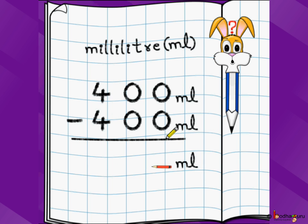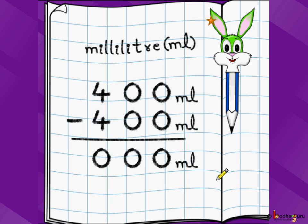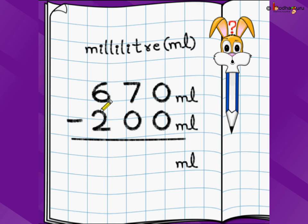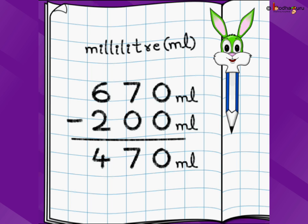Let us take a problem of millilitre. 400 millilitre minus 400 millilitre — the answer is also going to be in millilitre. We start from the rightmost position: 0 minus 0 is 0, 0 minus 0 is 0, 4 minus 4 is 0. So the answer is 0 millilitre. Let us take another problem: 670 millilitre minus 200 millilitre. Again start from the rightmost digit: 0 minus 0 is 0, 7 minus 0 is 7, 6 minus 2 is 4. Answer is 470 millilitre.